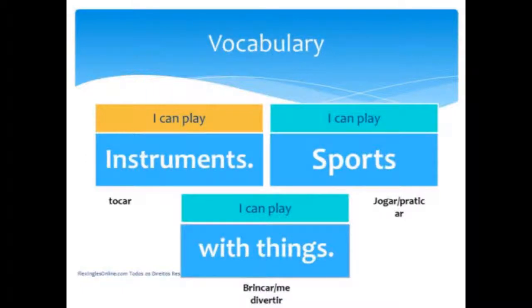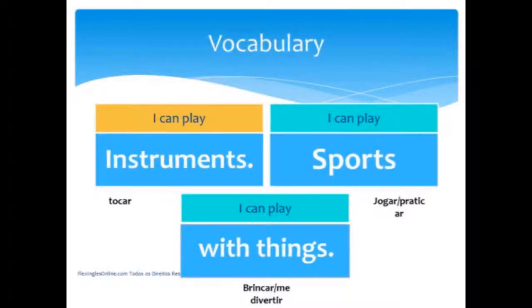With the verb 'to play' we have basically three options: I can play instruments, I can play sports, and I can play with things. So there you have three different meanings for the verb 'to play': tocar instrumentos (play instruments), jogar ou praticar esportes (play sports), and brincar com coisas ou se divertir (play with things).